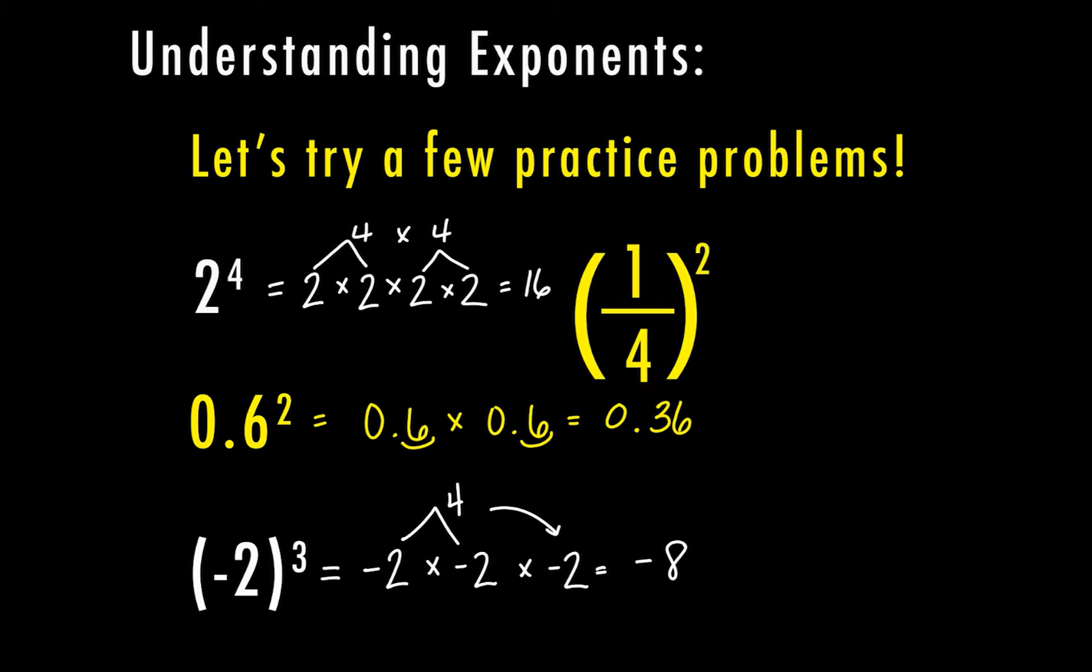For our fourth problem over here, we have 1 fourth squared. So same as with the negative, the entire fraction is in parentheses. So that means I'm going to be multiplying 1 fourth times 1 fourth. Straight across the top, multiply straight across the bottom. 1 times 1 is 1, 4 times 4 is 16.